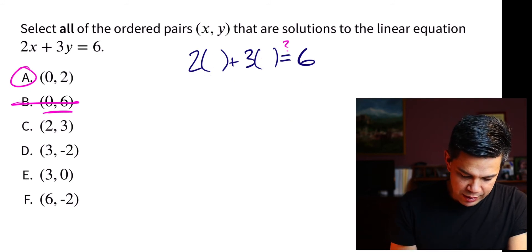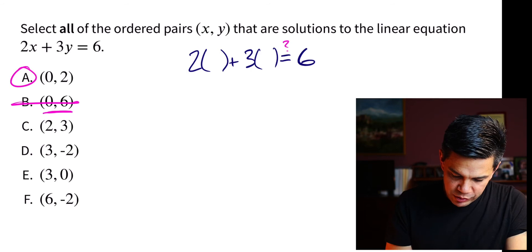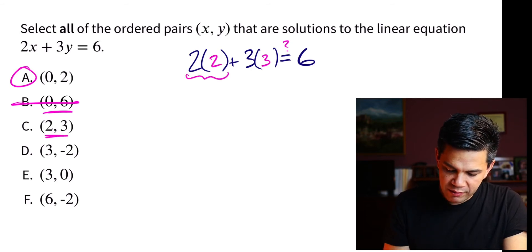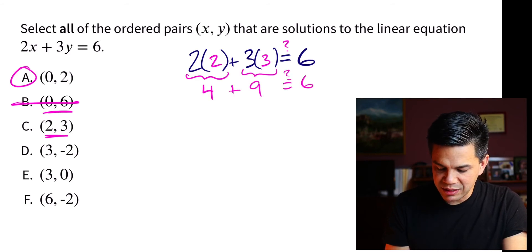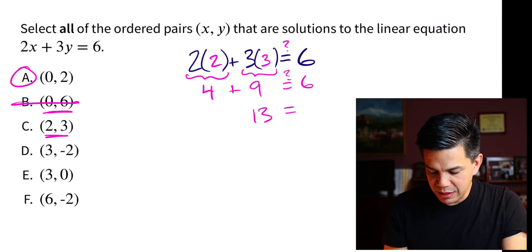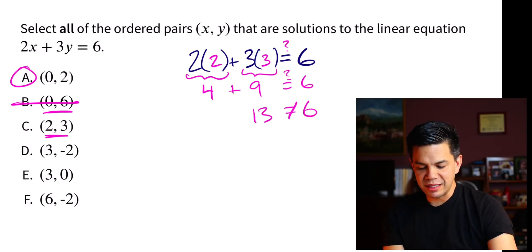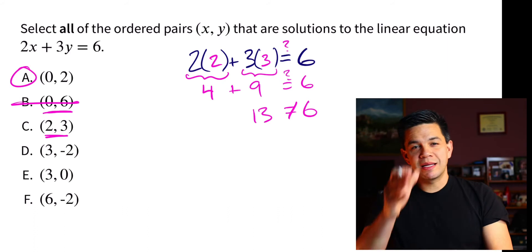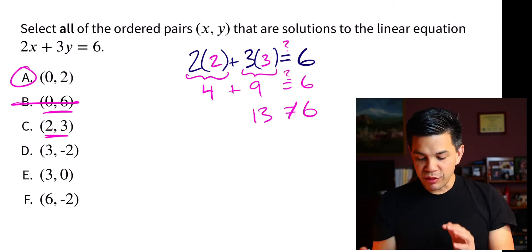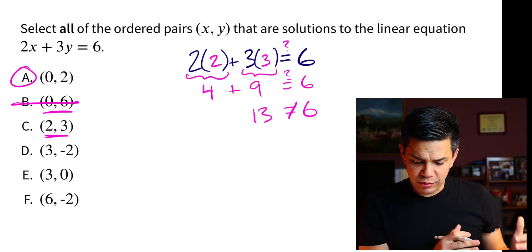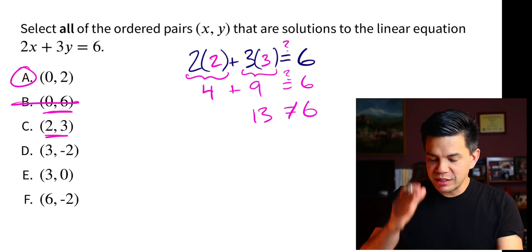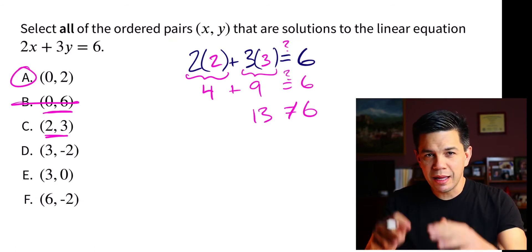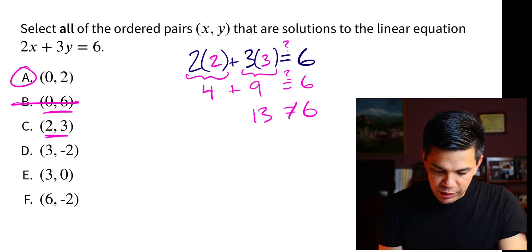All right, moving on. C. So we're going to drop in a 2 for x and a 3 for y. Evaluate 2 times 2 plus 3 times 3 is 9. Does that equal 6? Of course, 13 does not equal 6. Pay attention to my equal signs. I'm keeping them all in a row. I'm not really messing with anything. I'm keeping the 6 on the right side. I'm keeping the rest of those expressions on the left side on the left side. And we just want to see if the left side equals the right side, we have a solution to our equation.